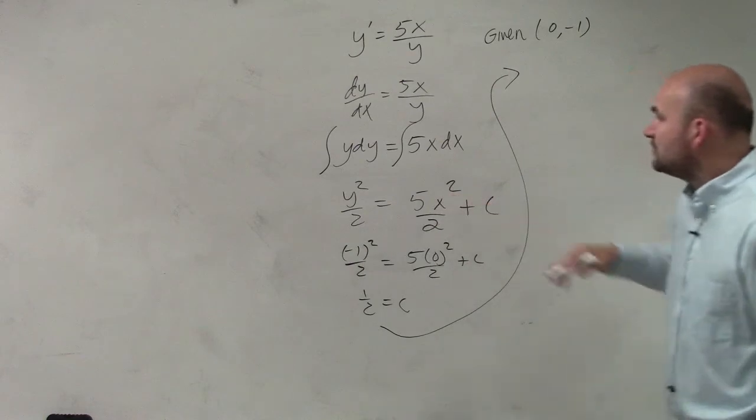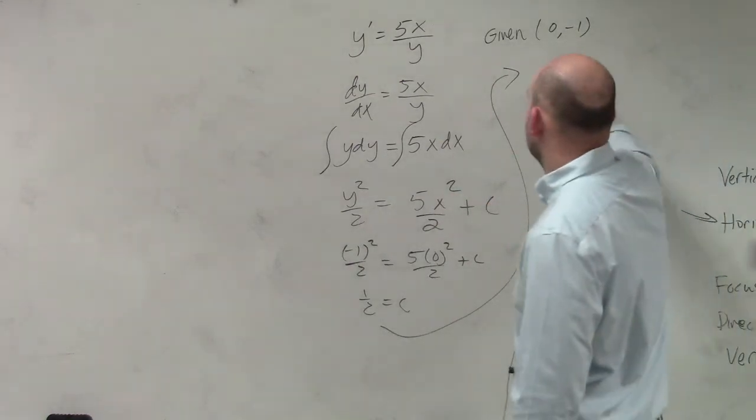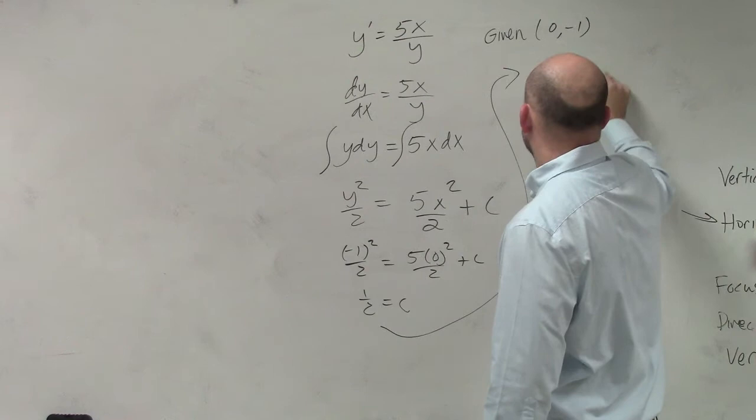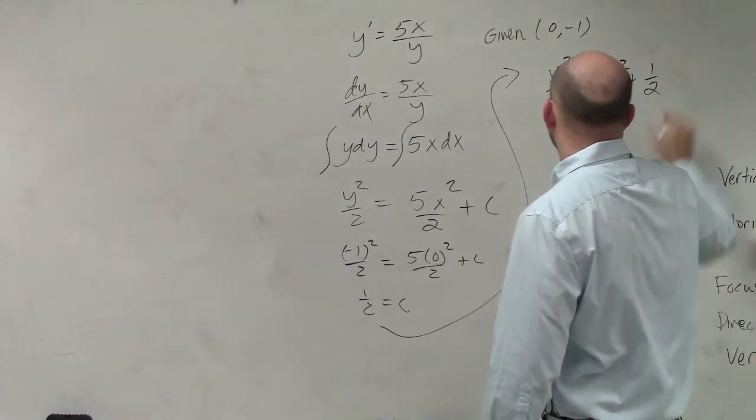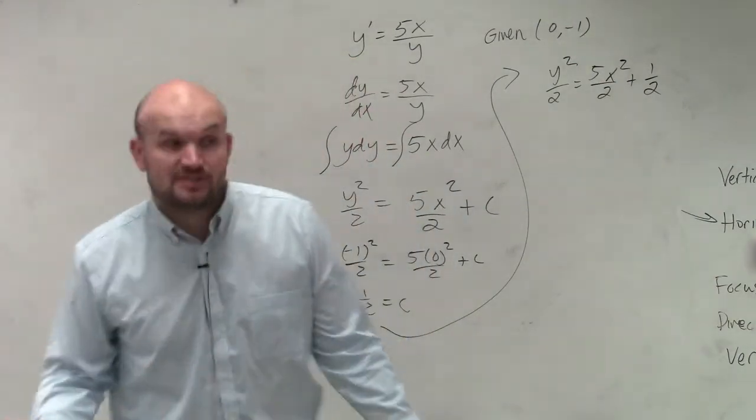So now I can plug that back in to my equation. So I have y squared over 2 equals 5x squared over 2 plus 1 half. And then I need to solve for y.